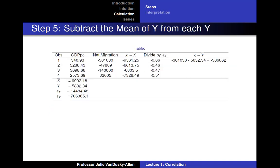Then you subtract the mean of y from each y. Negative 381030 minus 5832.34 equals negative 386862.